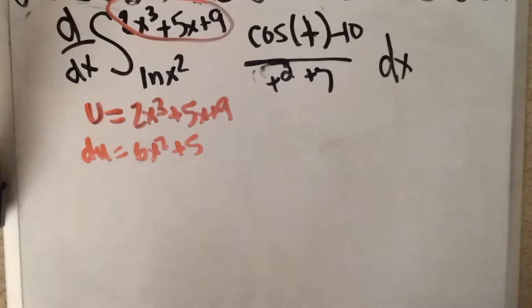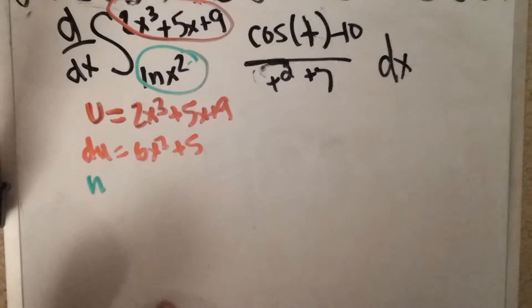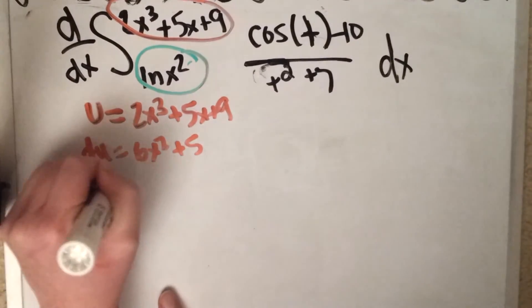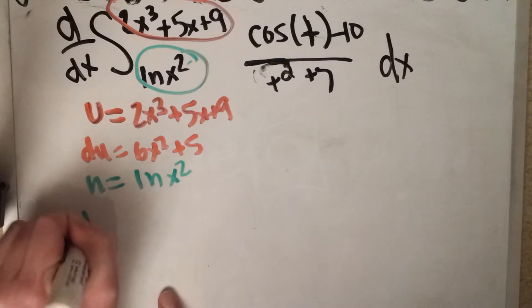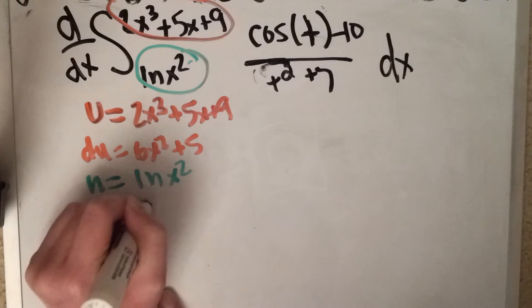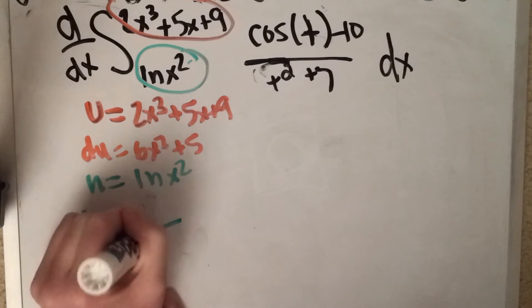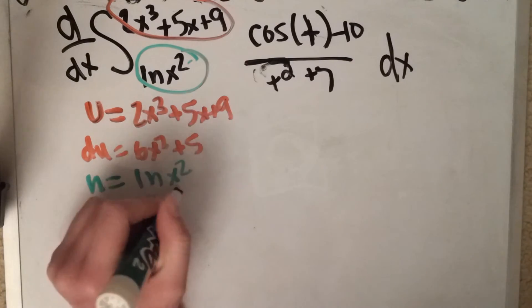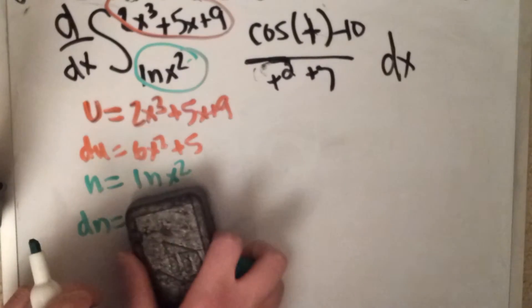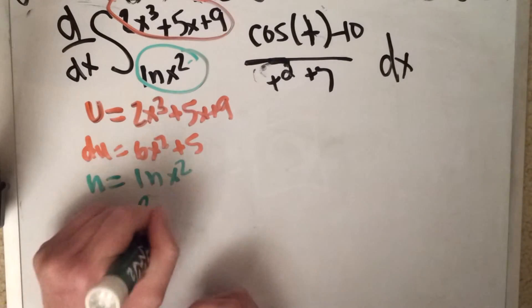So let me grab a different color. This would be n. So n equals ln x squared, derivative of n is just going to be, x squared over, sorry that was backwards. The derivative of this is going to be 2x over x squared, which is just, if you want to simplify it even more, 2 over x.